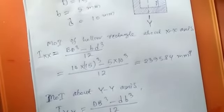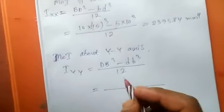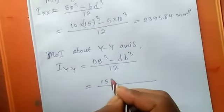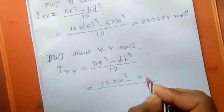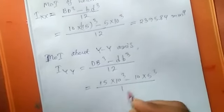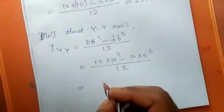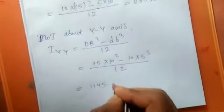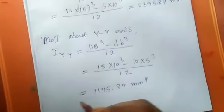So we put this value. Capital D means 15 into 10 cube minus 10 into 5 cube divided by 12. So this will be 1145.84 mm to the power 4. This is our second answer.